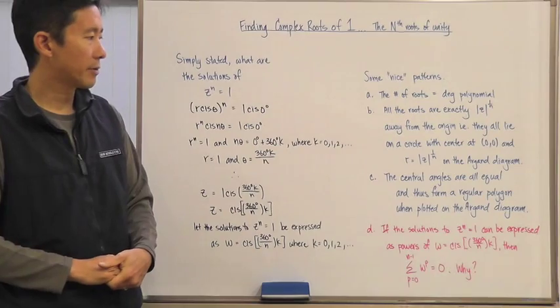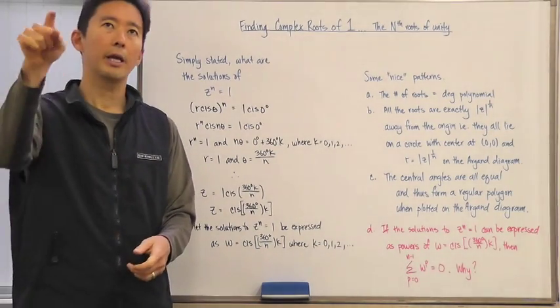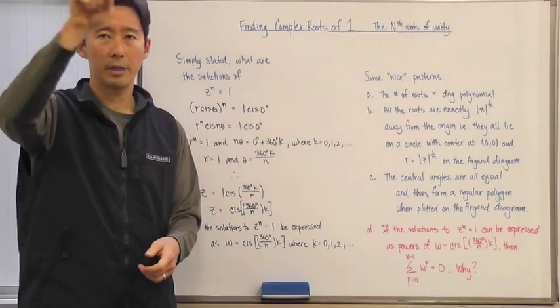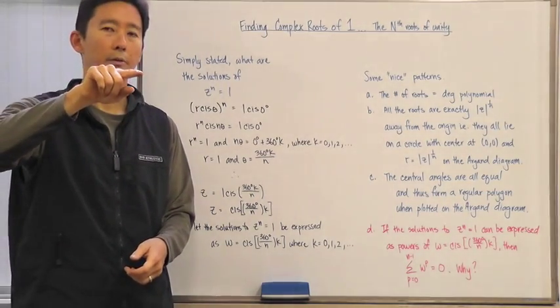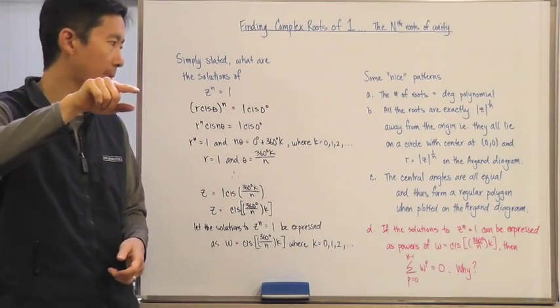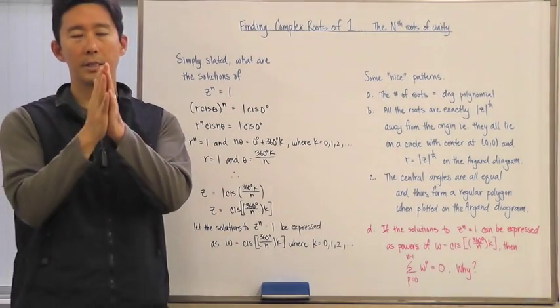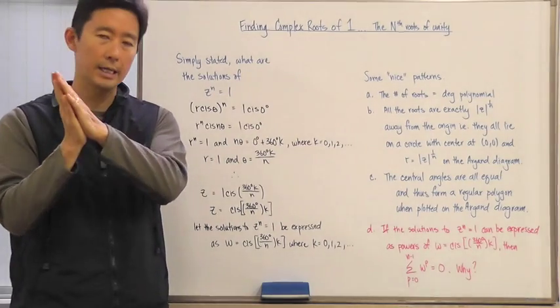Lastly, I'm hoping that everybody saw that the central angles are all going to be equal. And thus when we go ahead and plot it, not only is it going to be on a circle an equal distance away from the origin on the Argand diagram,